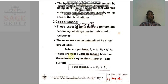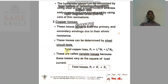These copper losses are also called variable losses, because they vary as the square of the load current. Core losses are fixed losses, whereas copper losses are variable losses.